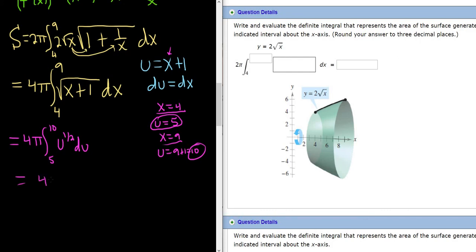So this is 4 pi. Integrating, we add 1. So it would be 1 half plus 1. So 1 half plus 2 halves, so 3 halves. And when we divide by 3 halves, we really multiply by 2 thirds. And we're going from 5 to 10. So this is 8 thirds pi, u to the 3 halves from 5 to 10.